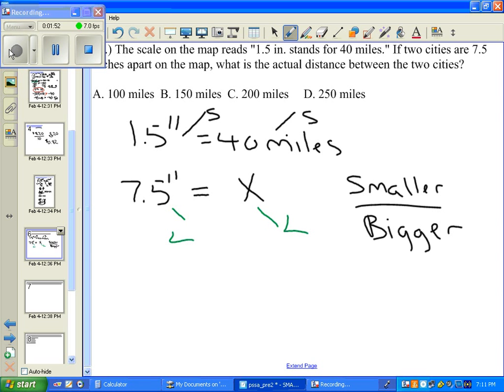So now we'll set it up pretty easily. We're going smaller to larger to bigger. So we got 1.5 is to 7.5 as 40 is to X.